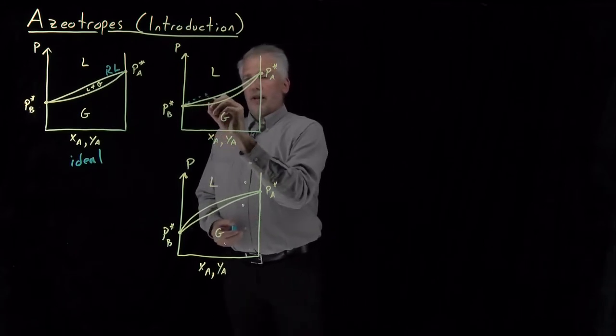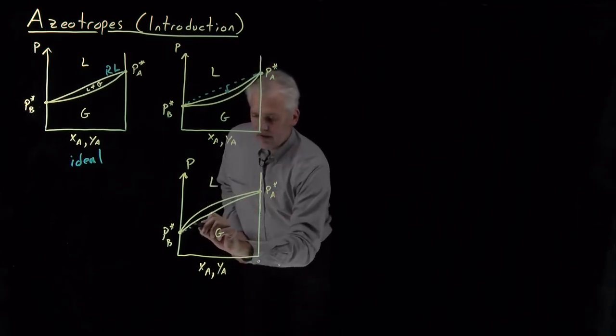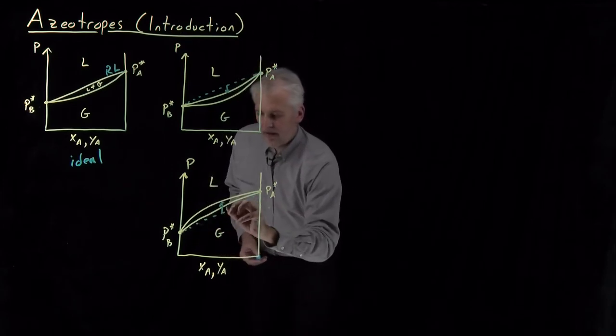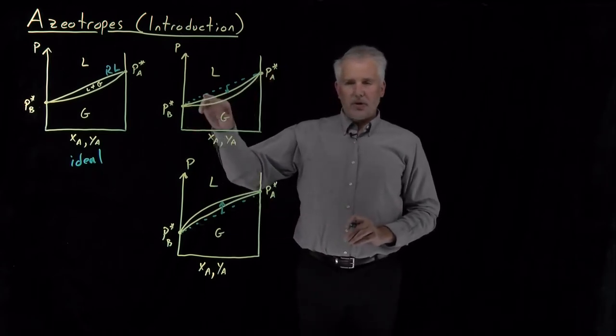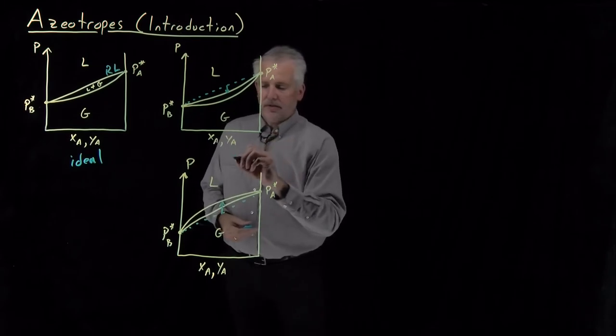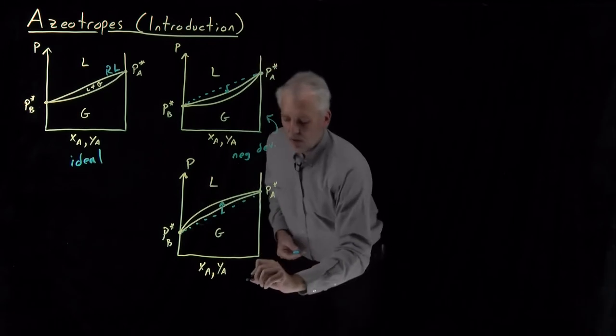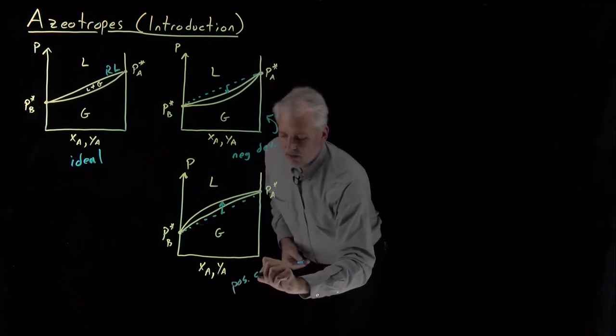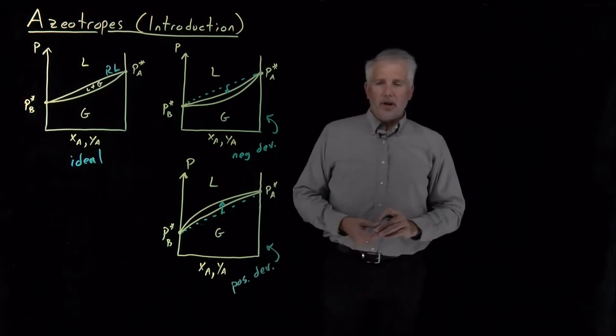We've seen how if we have negative deviations or if we have positive deviations from Raoult's law, the bubble point curve and the dew point curve can either sag downward for this case of negative deviations, that's for this curve, or for positive deviations where the pressures are greater than they would be expected to be from Raoult's law.